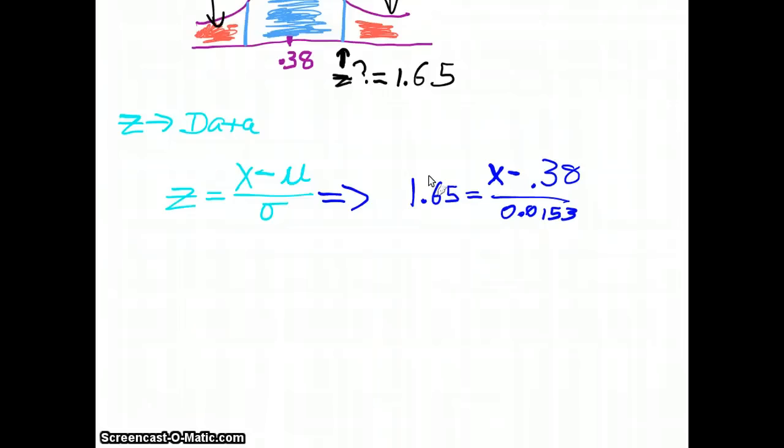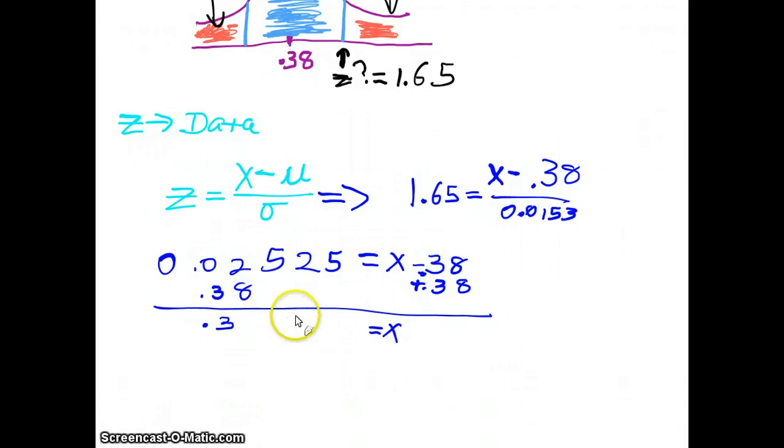Well, looking at that, what we're going to do is we're going to multiply the 1.65 times the standard deviation, which is .0153. And from that, we get this next step right here, which is saying that we get 0.02525 is equal to x minus .38. Well, if we add this .38 to both sides, then what we actually come up with is that x is equal to, in this case, 0.02525 plus 0.38. And we end up getting 0.40525.